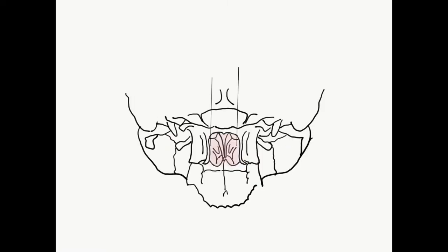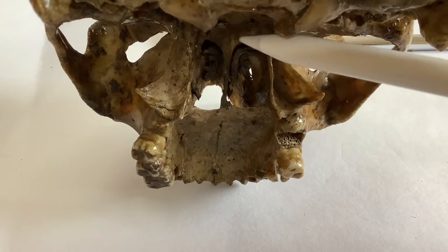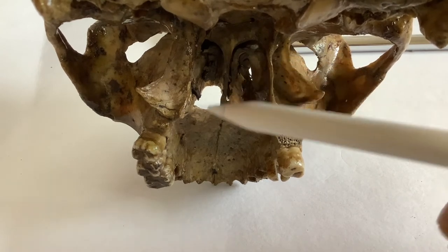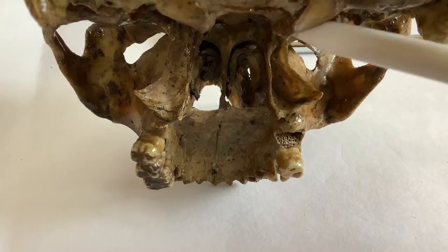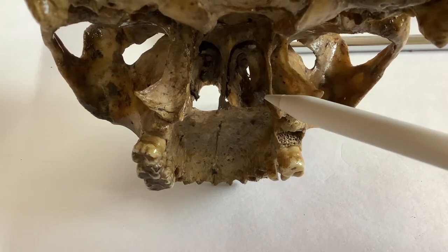The choana is actually the posterior opening of the nasal cavity. It is bounded superiorly by the body of the sphenoid, inferiorly by the horizontal plate of the palatine bone, and the midline is contributed by the vomer. On either side laterally we have the medial pterygoid plates. The same features can be appreciated in the articulated skull — the vomer in the midline, the horizontal plate of the palatine bone, and on either side the medial pterygoid plate.